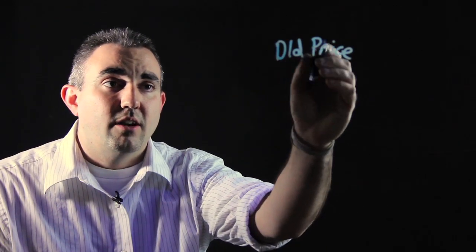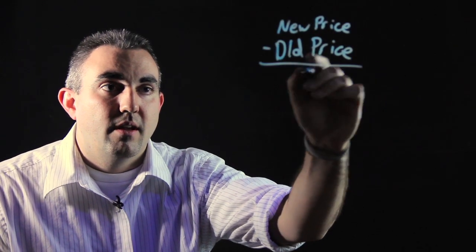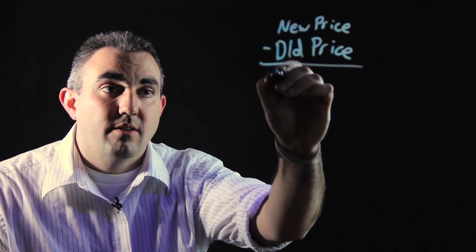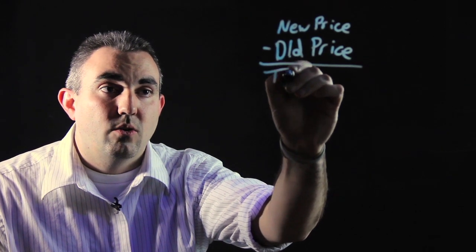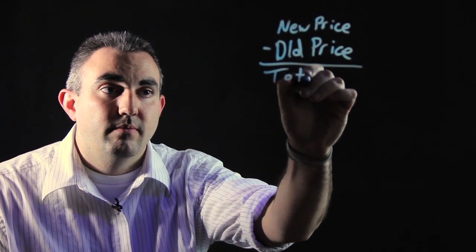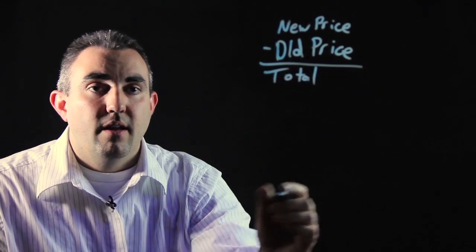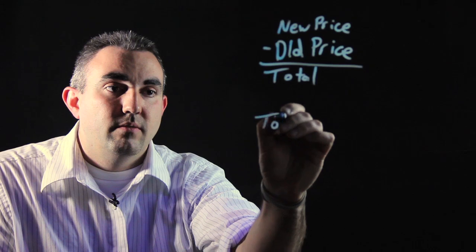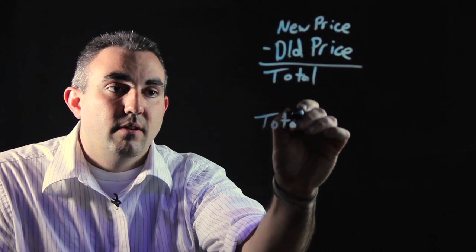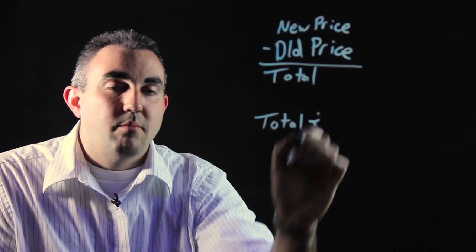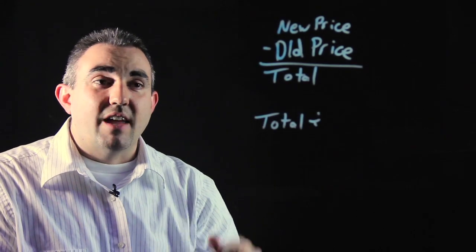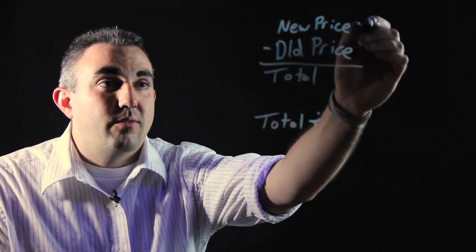So you take the new price and you subtract the old price, and you get a total. Now you take that total and you divide it by the average of the new and old price.